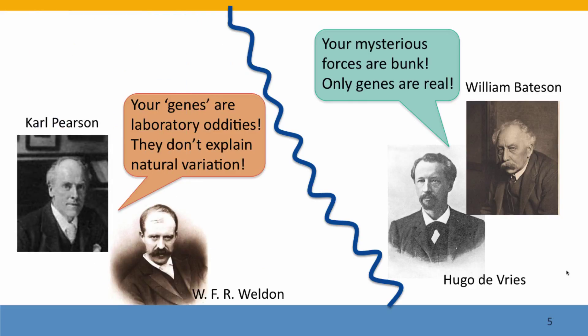The consequence was that there were now two schools of biologists. The biometricians studied continuous variation in natural populations and said these genes that the fruit fly people work on are just weird laboratory phenomena — they have nothing to do with natural variation or with evolution. On the other hand, the geneticists scoffed at the biometricians because they were invoking mysterious unscientific forces, whereas the geneticists had a clear explanation and understanding of the mechanism of heredity.